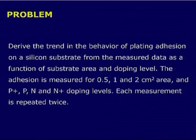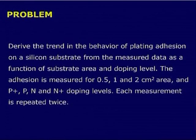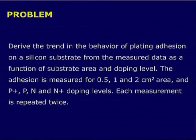Suppose a student has made measurements. Each measurement is repeated twice. In practice, if you are doing research, you may repeat a measurement four or five times. How many data points do we have? We have three different areas — 0.5, 1 and 2 centimeter square — and four different substrate conditions. So 4 into 3 is 12, and each measurement is repeated twice, giving 24 different values. From these 24 values, we want to derive a pattern.